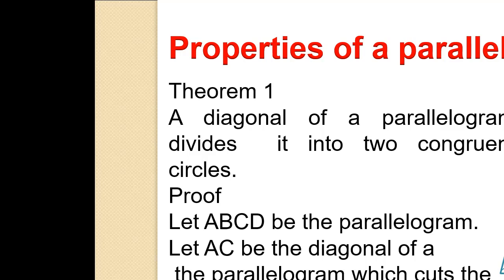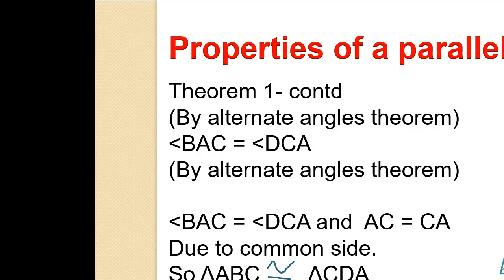So, Angle BCA equals Angle CAD by the Alternate Angles Theorem. Also, Angle BAC equals Angle DCA. AC equals CA due to the common side.